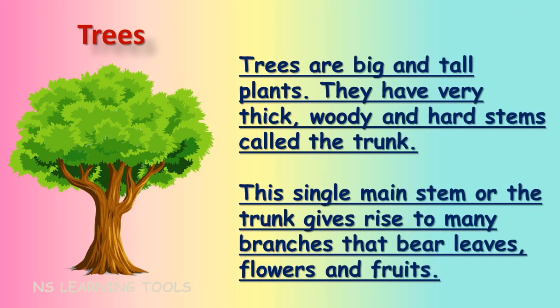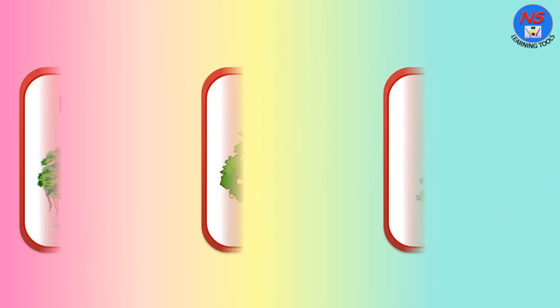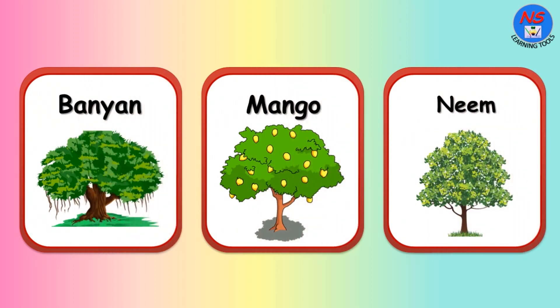Trees are big and tall plants. They have very thick, woody and hard stems called the trunk. This single main stem or trunk gives rise to many branches that bear leaves, flowers, and fruits. Banyan, mango, and neem are examples of trees.